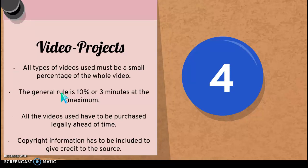For video in projects, any video you use has to be a small percentage of the whole video. The general rule is 10% of the video or three minutes maximum. So if you're going to use something for your project and it's relevant and educational, that's great, but you can't put more than three minutes of that movie or video into your project — you have to narrow it down and cut some of it out. All videos you use have to be purchased ahead of time and legally, and you have to include copyright information to give credit to the source so that you don't steal information.